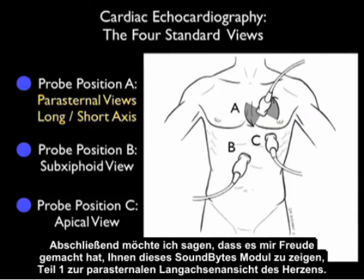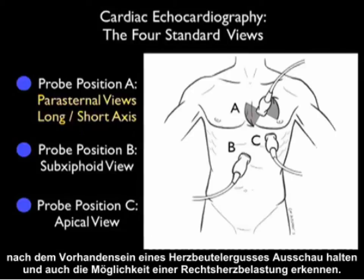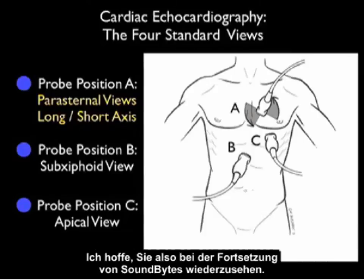In conclusion, this SoundBytes module covered part one of the parasternal long axis view of the heart. There's a great deal of information we can gain from this view, including left ventricular contractility, the presence of a pericardial effusion, and the possibility of right ventricular strain. Future modules will cover further parasternal views, the sub-xiphoid views, and the apical views.